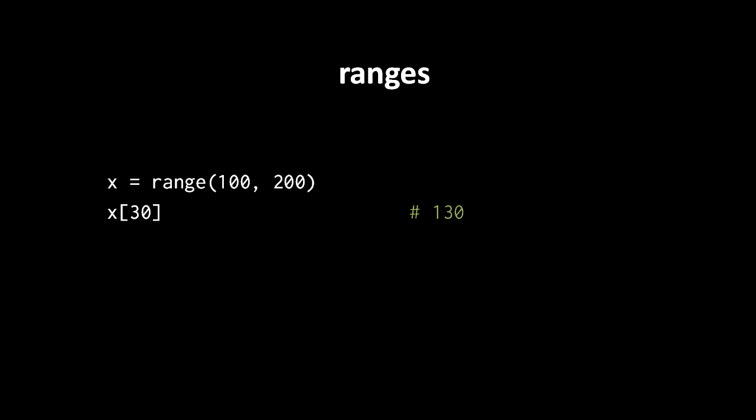The range object returns the correct value 130 simply by taking its starting value 100 and adding 30 to it. If this same range were expressed as a tuple, you'd have the whole sequence of values stored in memory: 100, 101, 102, 103, 104, 105, and so on — that obviously takes up a lot more space. It's bad enough when you're talking about a sequence of 100 numbers, but just imagine a thousand numbers or a million or more.